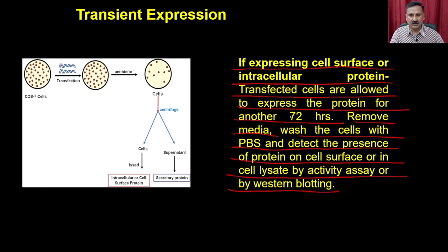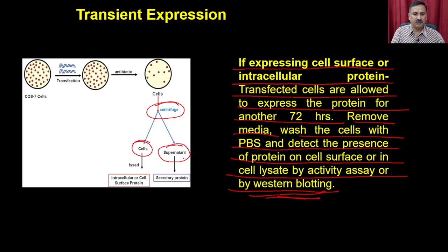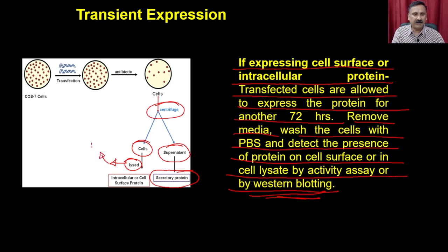What you are going to do is collect the cells by centrifugation, giving you two fractions: either the cell fractions or the supernatant. If you have put the cells under the secretory pathway, the protein is going to be secreted into the supernatant. If it is present with the cell membrane or is an intracellular protein, it will be present on the cell surface. In that case, you lyse the cells with an appropriate lysis solution, which gives you two fractions: the pellet fraction and the cytosolic fraction. The cytosolic fraction contains soluble proteins; the pellet fraction contains proteins expressed on the cell surface, as that will be the membrane fraction.